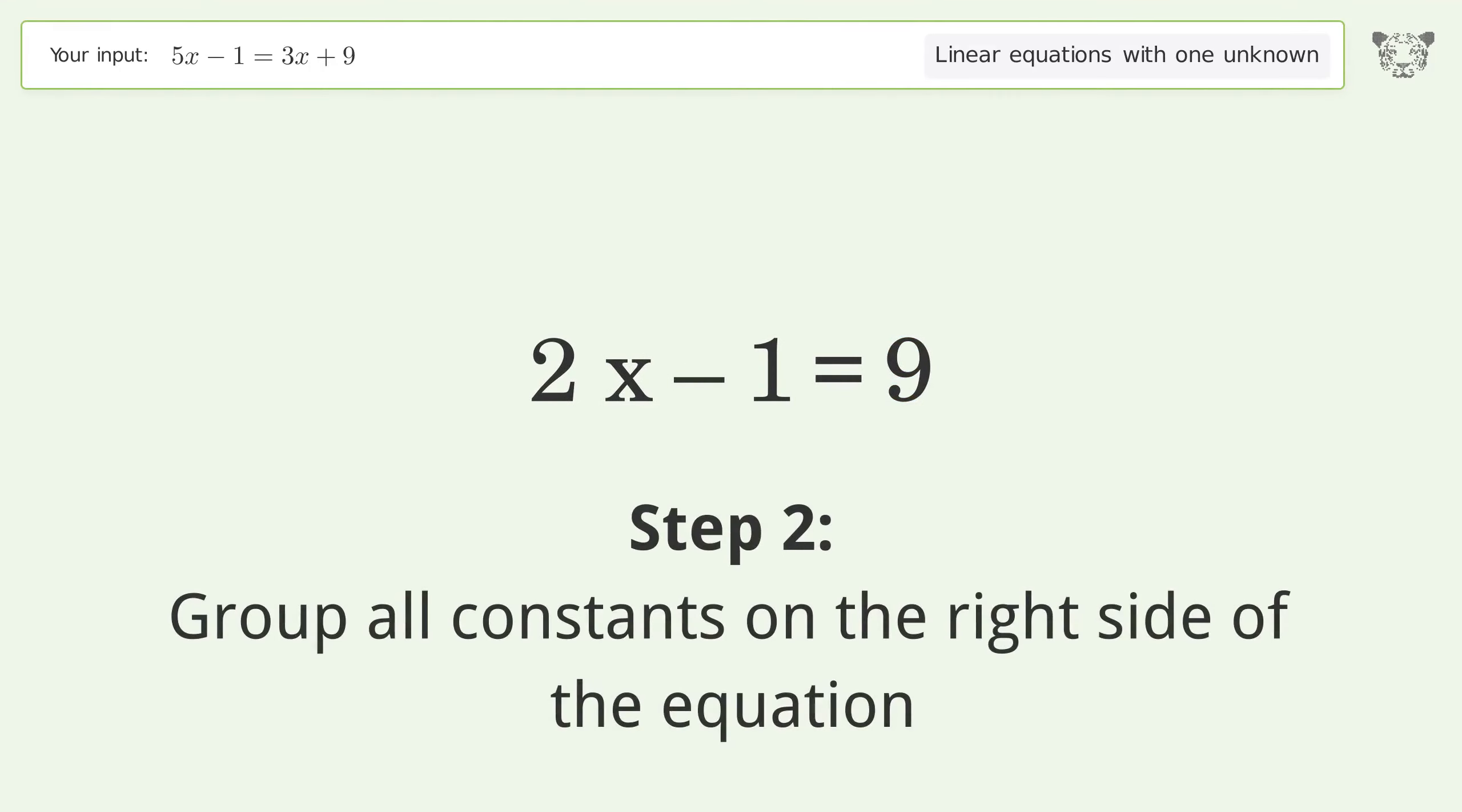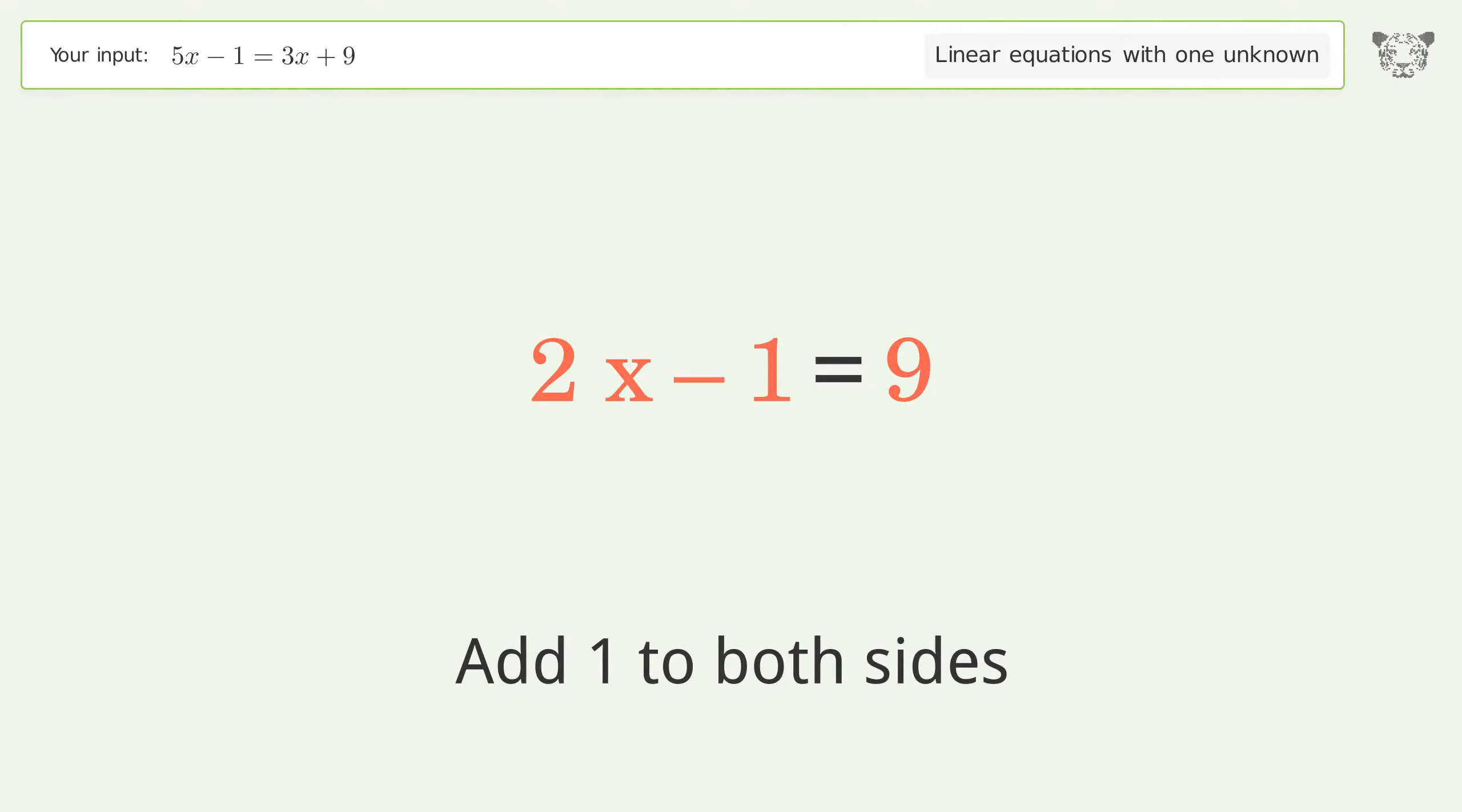Group all constants on the right side of the equation. Add one to both sides. Simplify the arithmetic.